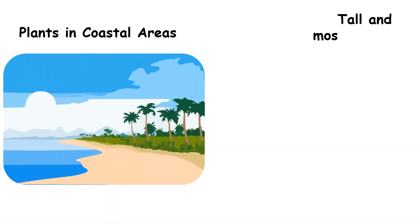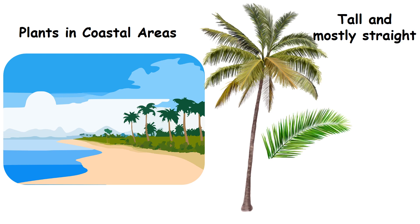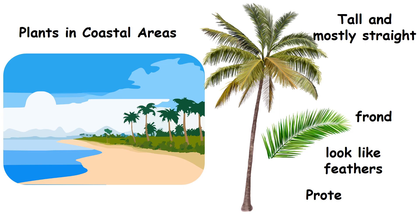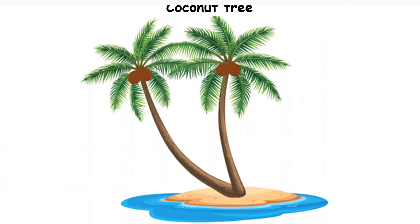Plants in coastal areas. They are tall and mostly straight. Their leaves are called fronds. The fronds look like feathers and protect plants from wind. These plants are tolerant to saline water. Example: coconut tree.